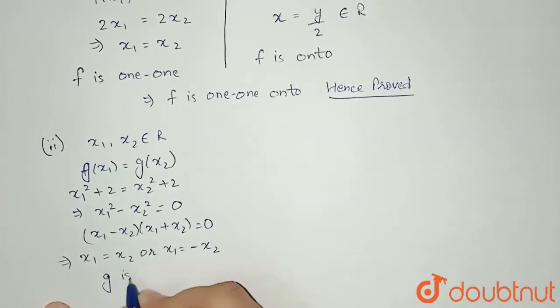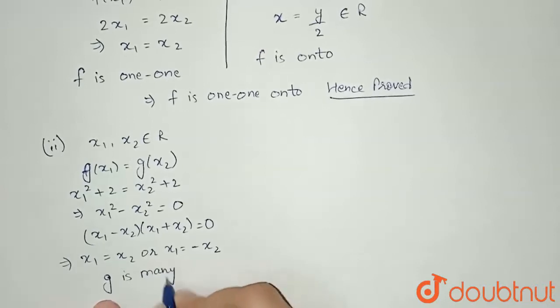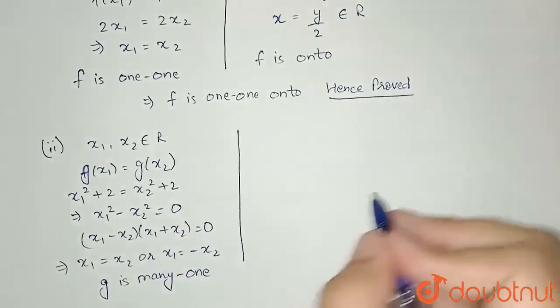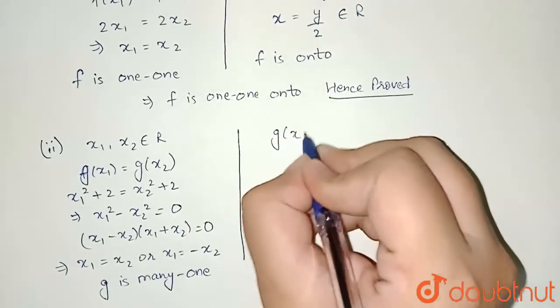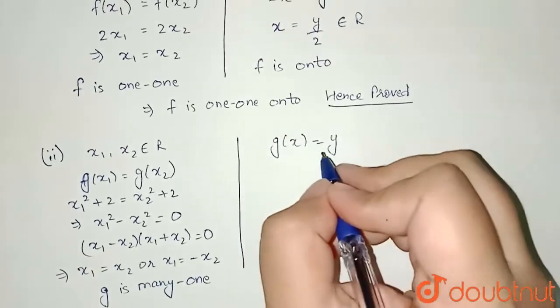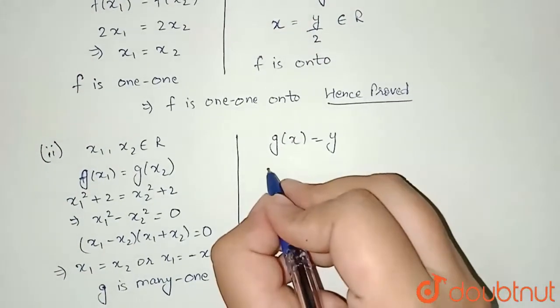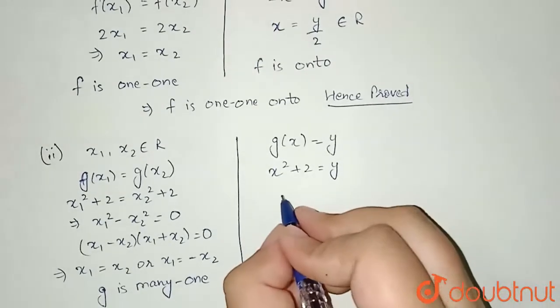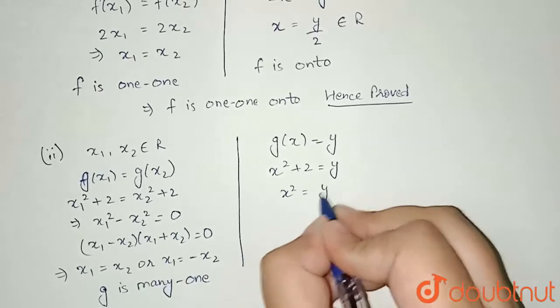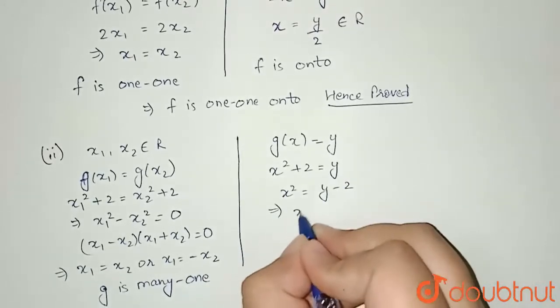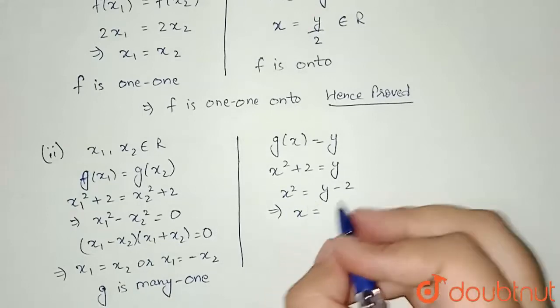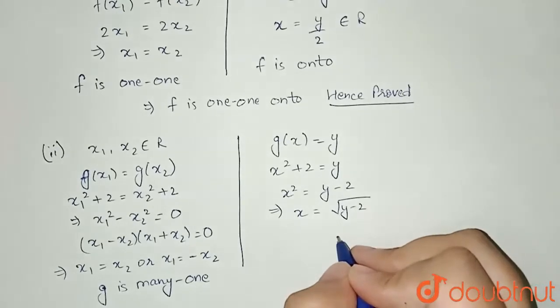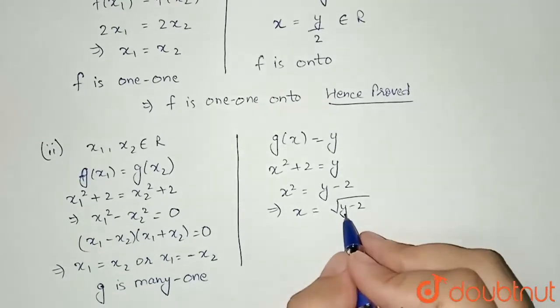I have proved that it is many-one. Now let us consider for into or onto. So I am considering here g(x) = y. Suppose my g(x) = y, so g(x) is x² + 2 = y, and I can write x² = y - 2. This implies x = √(y - 2).